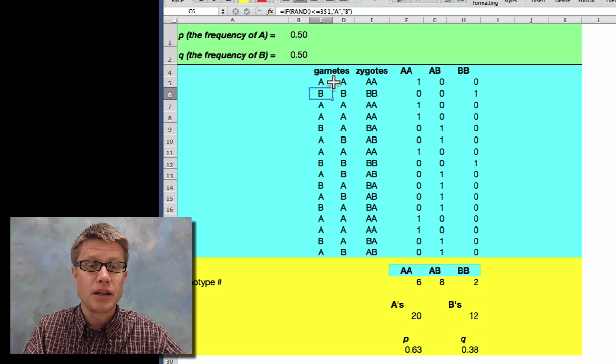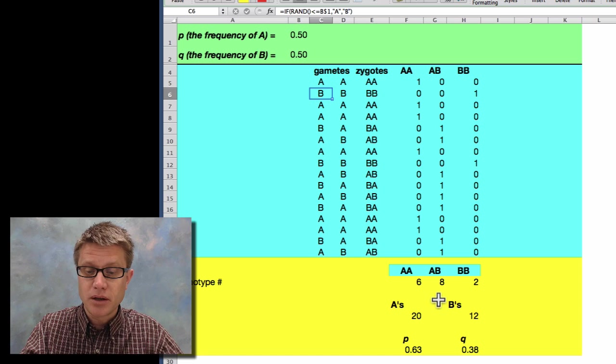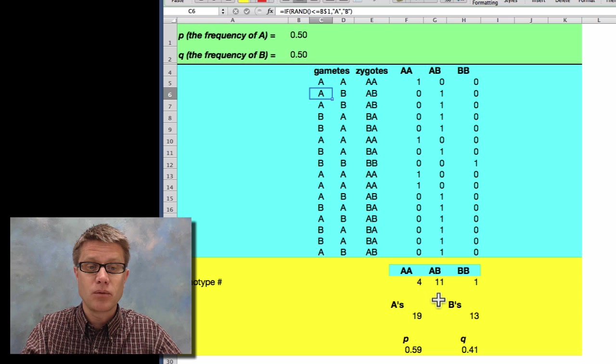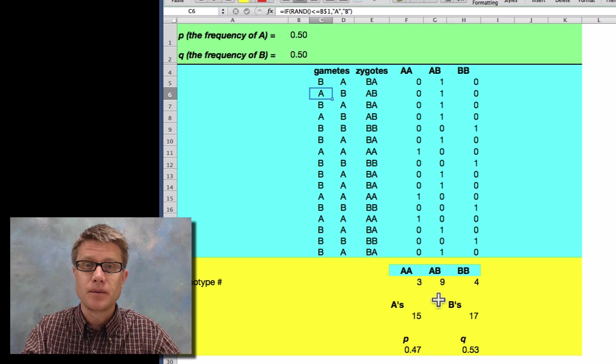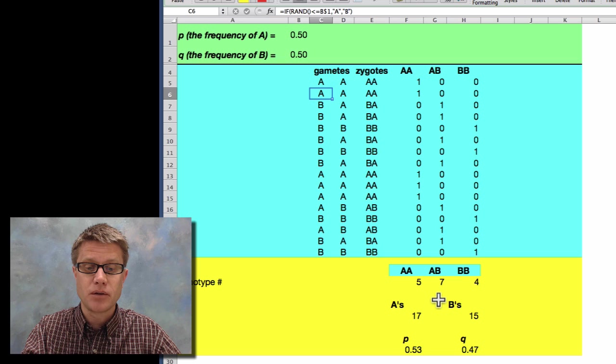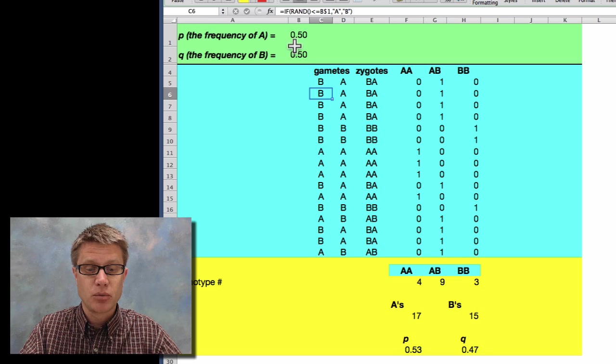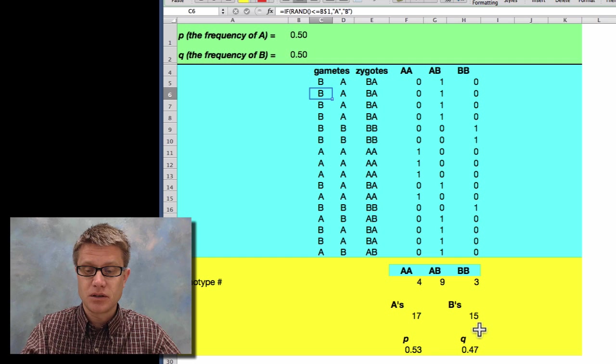So here's the spreadsheet. These are the P and Q values. These are gametes that are each created, these are the zygotes, and these are the phenotype ratios down here. What I can do is just rerun the simulation. Watch those numbers in the spreadsheet. It's recalculating every one of these cells over and over. We're starting at 0.5 and 0.5, but we're getting new P and Q values that tend to change.